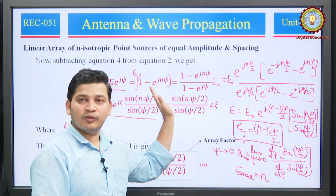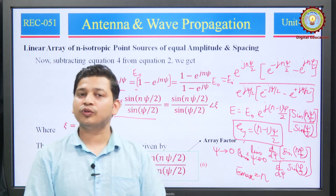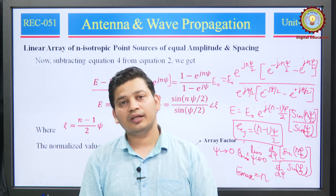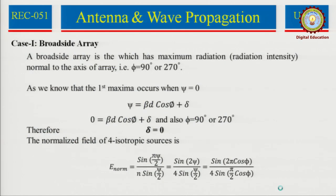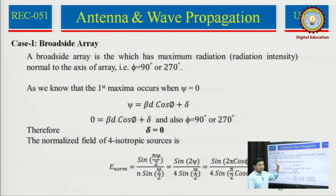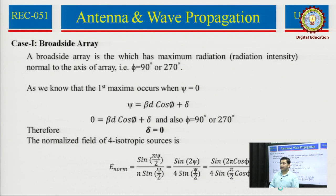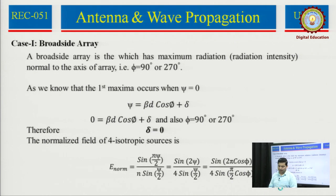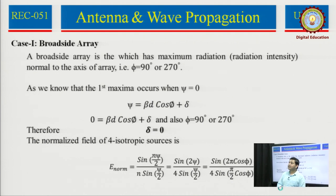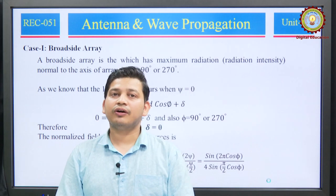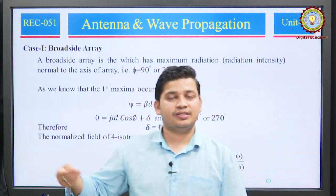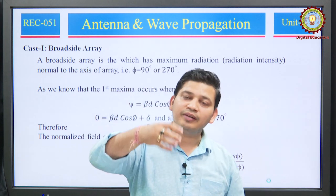Please understand this concept: if you directly put psi=0, sin(0)=0, so the whole expression becomes indeterminate. We need to apply a mathematical rule, and the beauty is that we get the maximum value equal to n — where n is the number of sources. If I have 4 isotropic point sources, n=4; if I have 8, n=8. This is how we find our solution.